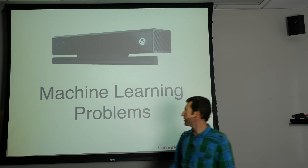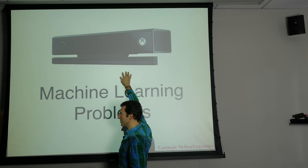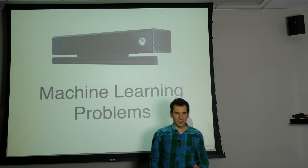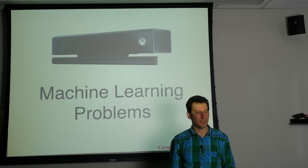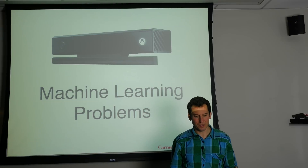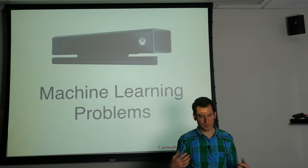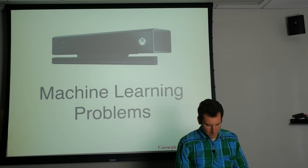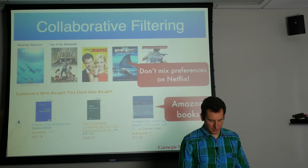Here's one example that some of you might have in your homes. If you have an Xbox, you might have a Kinect, and the Kinect essentially tracks where you are based on a fairly nice sensor, and then it uses computer vision to find out where you are and at which depth. Let's start with something very simple: collaborative filtering.